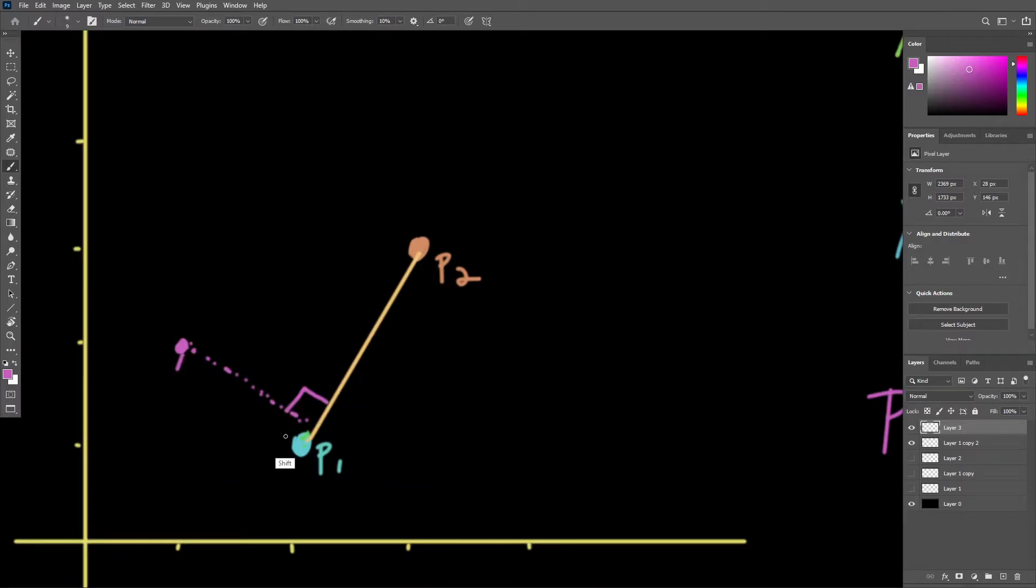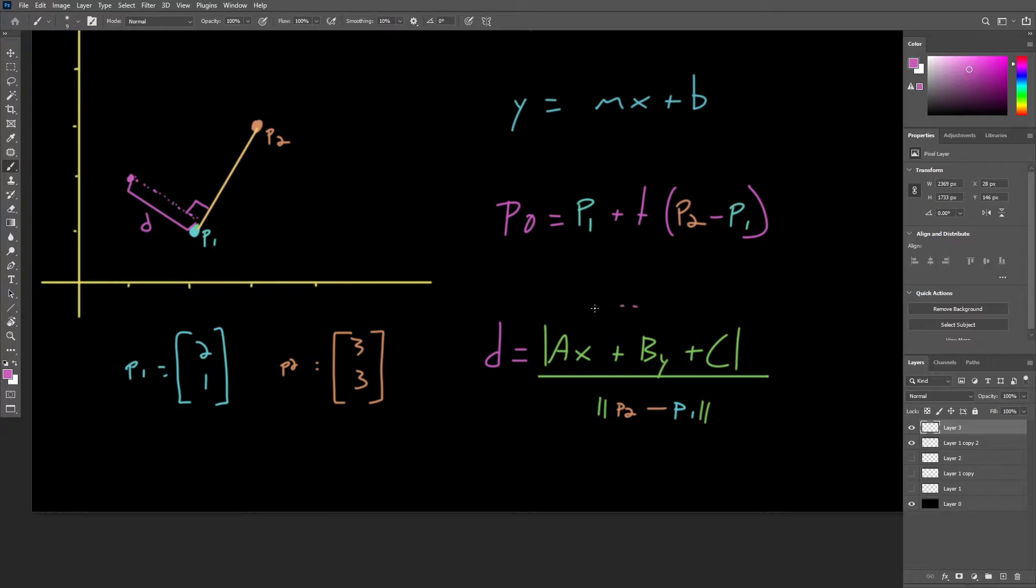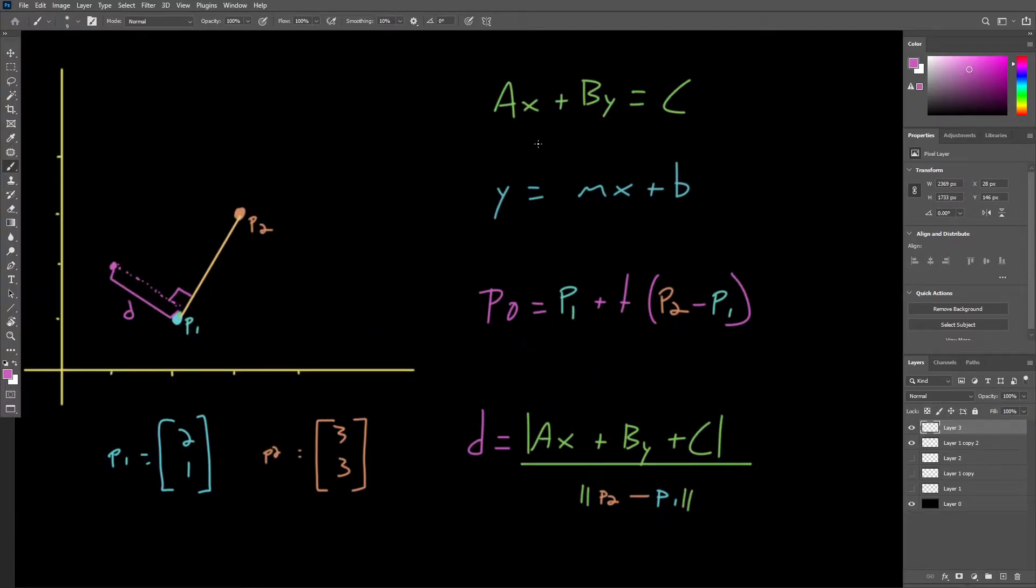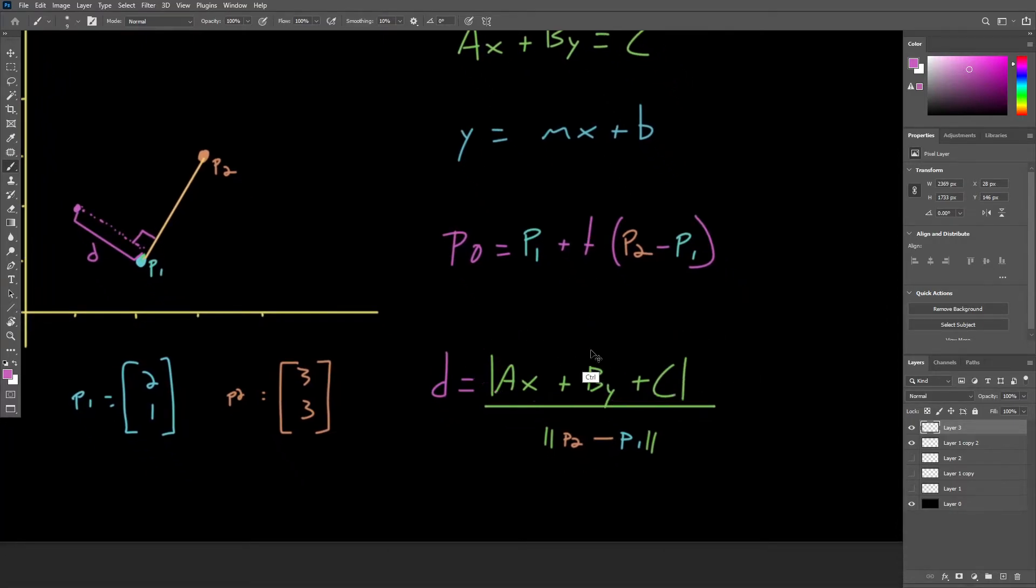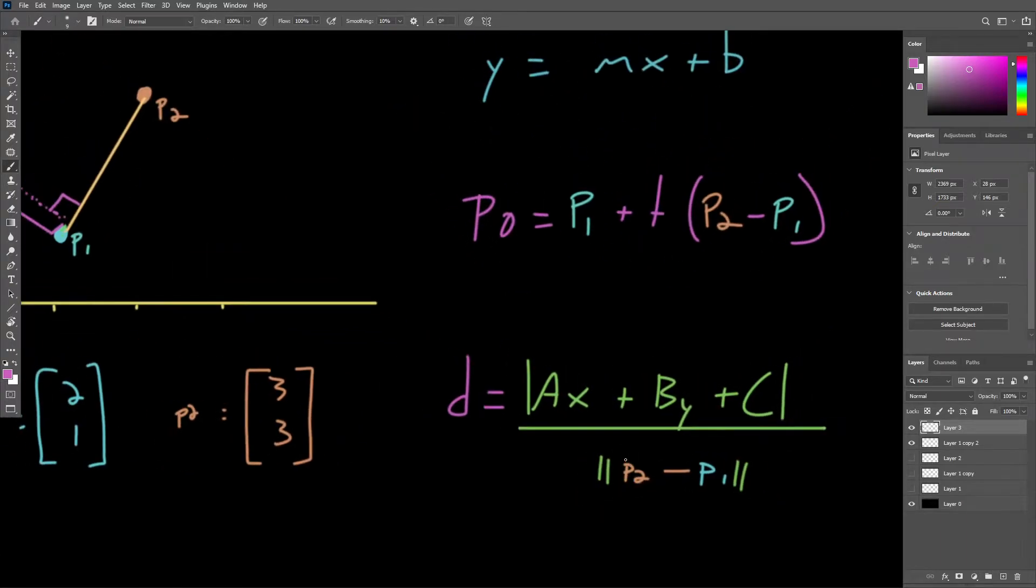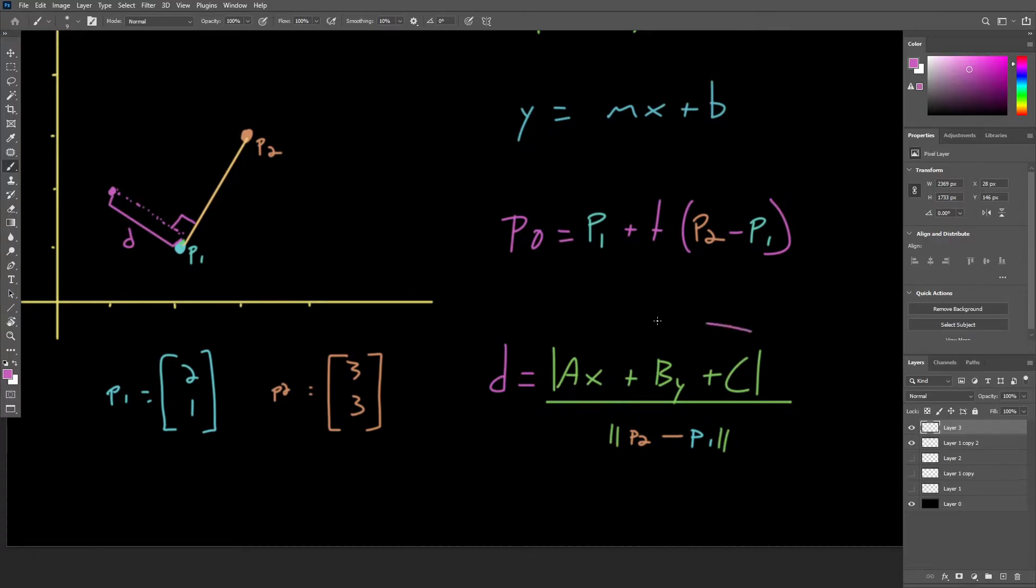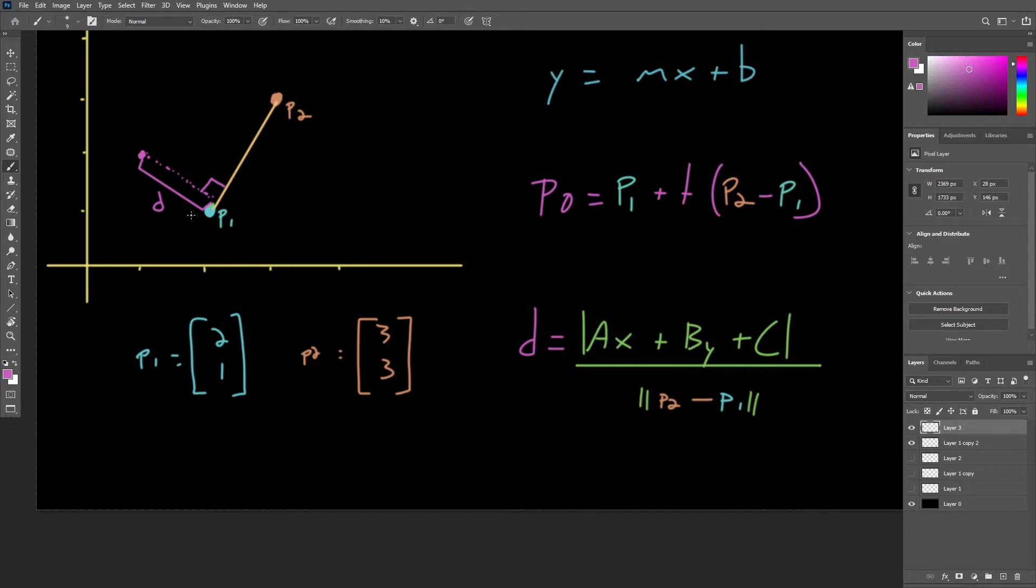Now, this distance, let's call it D, this distance can be found using this equation, which has some familiar looking components. Basically a rearrangement of the line equation itself, making sure we grab the absolute value of that. And dividing that by the magnitude, just notice the difference here, we do use double bars to indicate magnitude and single bars to indicate absolute value. So we divide basically the result of the line equation by the magnitude of the vector from P1 to P2.